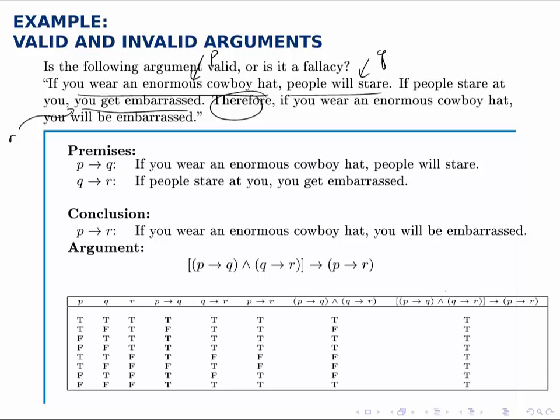And notice that if we build this table, which is a little bit longer than the other ones for the other arguments, we still get a column that's all true. So this argument is valid, and this is called transitive reasoning.